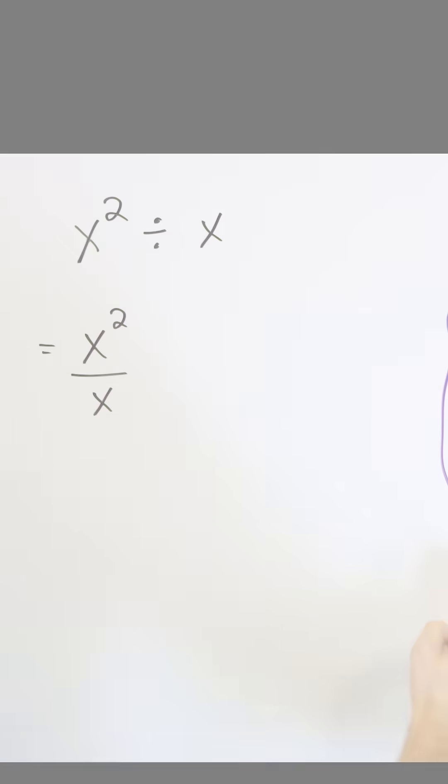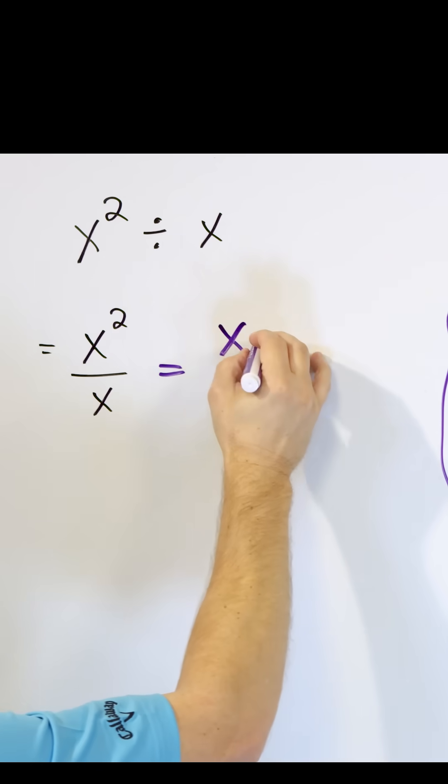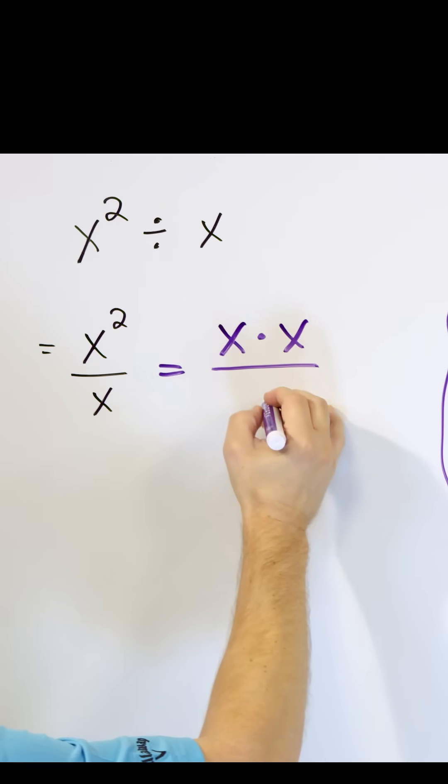Our problem looks scarier, but it's not because when you think about it, on the top, what do you have? x squared is x times x. And on the bottom, you just have x.